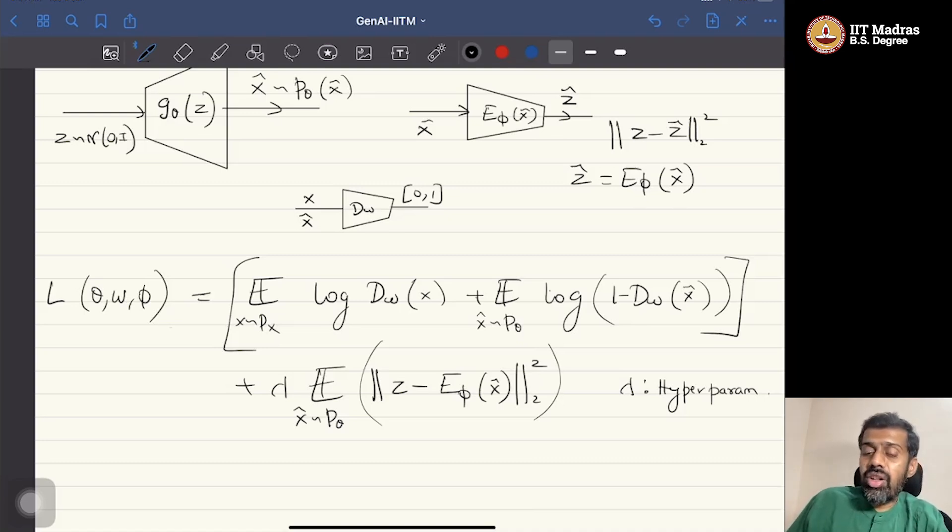And all three networks are now trained simultaneously. So this is trained as the usual GAN, and take an X cap that is generated by a particular Z and pass it through the encoder, and the encoder gradients are computed.